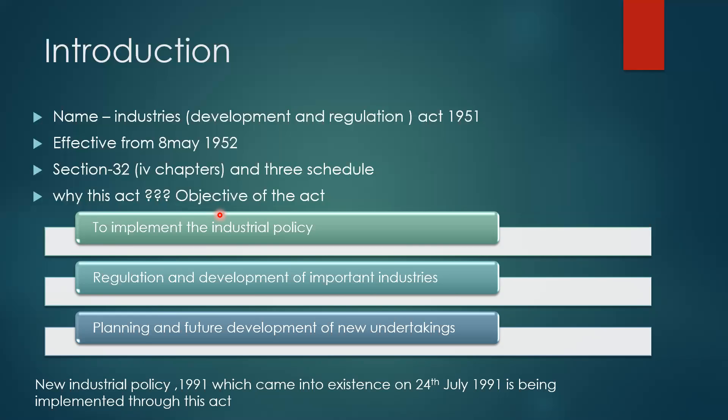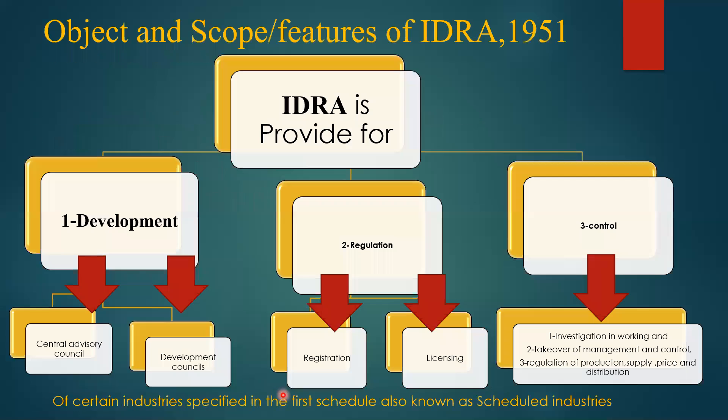The second objective is to regulate and develop important industries — all the important industries specified in the first schedule attached to this act. Third is the planning and future development of new undertakings. A system of licensing is used under this act to regulate the planning and future development of new undertakings. The New Economic Policy 1991, which came into picture on 24th July 1991, is basically implemented through this act.